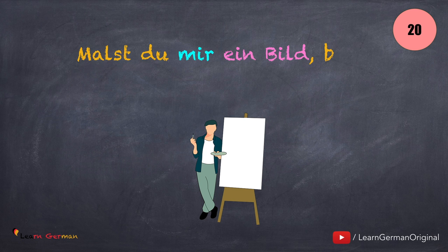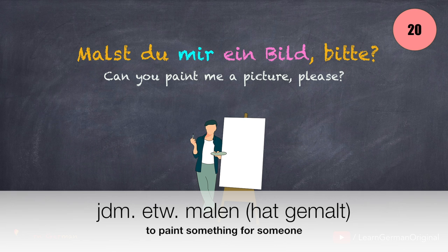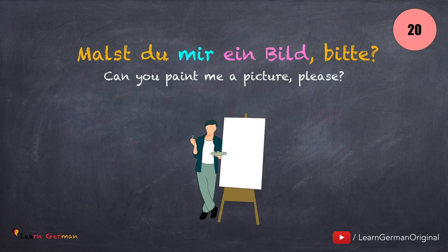Moving on to the next one: Malst du mir ein Bild bitte? Jemandem etwas malen. You can also use this verb without the Dativobjekt.